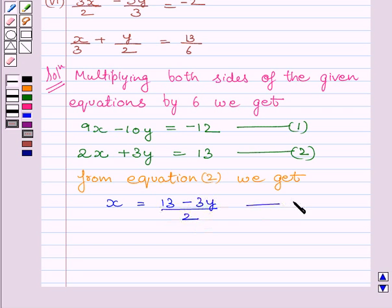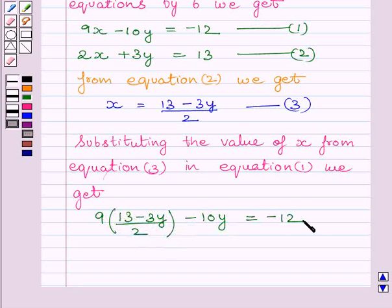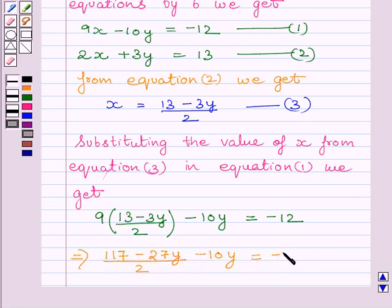Substituting the value of x from equation 3 in equation 1 we get 9 multiplied by 13 minus 3y upon 2 minus 10y is equal to minus 12. This implies 117 minus 27y upon 2 minus 10y is equal to minus 12.